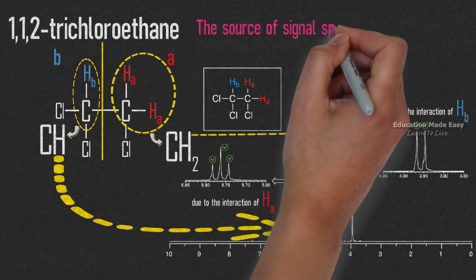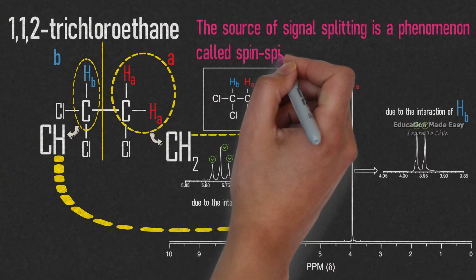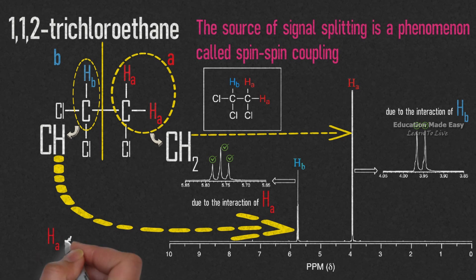The source of signal splitting is a phenomenon called spin-spin coupling, where Ha and Hb are spin coupled.